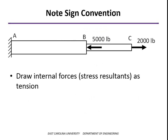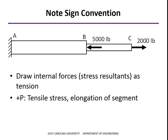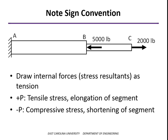The sign convention is very important here. Draw the internal forces as though they're in tension, and if they come out positive, that segment is under tensile stress and the length change will be positive — elongation. If the value comes out negative, that segment is under compressive stress and will shorten. In this particular case, AB is under compression and gets shorter, while BC is under tension and gets longer.